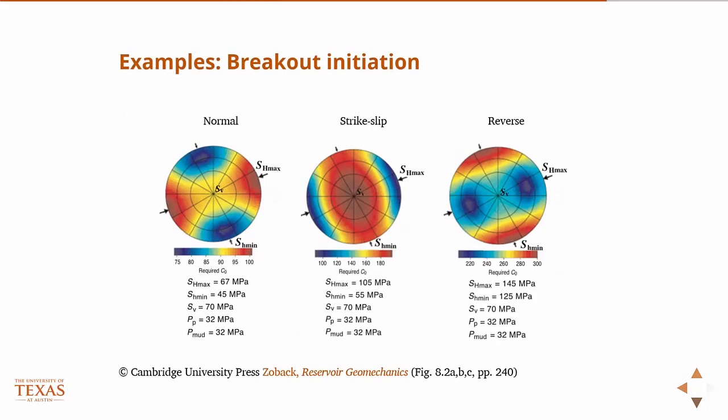So with that and a failure criterion, in this case I'll just use the simplest one, Mohr-Coulomb, with that and a failure criterion, we can determine or we can create these plots that give us some information about breakout initiation. So in this case, the stresses that are provided there along with the pore pressure and the wellbore pressure or the mud pressure are translated into or moved into the wellbore frame then turned into the principal stresses. And then with those principal stresses, we look at the failure criterion, in this case the Mohr-Coulomb failure criterion, and they plot the required unconfined compressive strength of the rock.